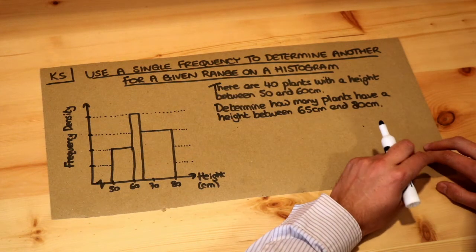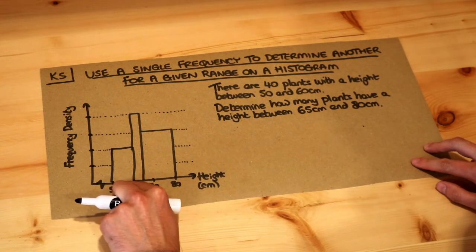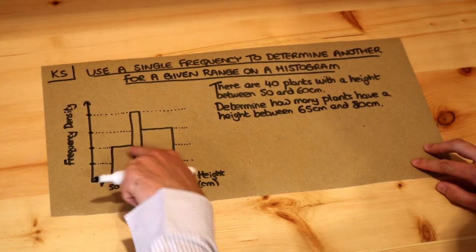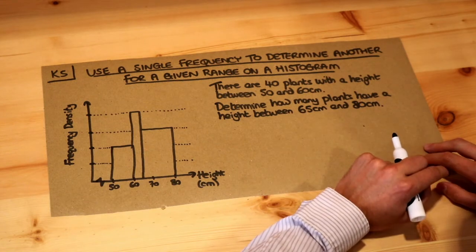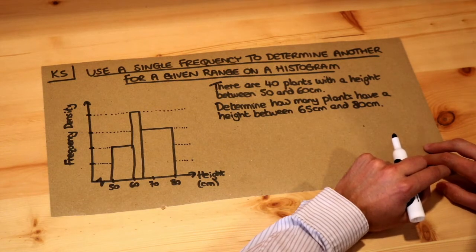There are 40 plants with a height between 50 and 60 centimeters. That's here, the 50 to 60 centimeters. Determine how many plants have a height between 65 centimeters and 80 centimeters.